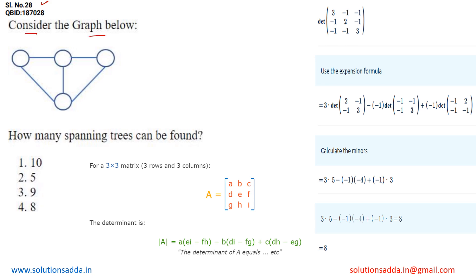Consider the graph below. A graph is given in which four vertices are present. Let's label these vertices as 1, 2, 3, and 4. There are 5 edges in this graph. So how many spanning trees can be found? We have to find the total number of spanning trees we could make with the help of this given graph.